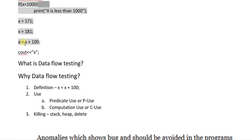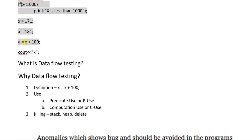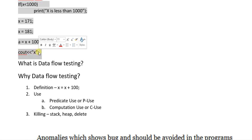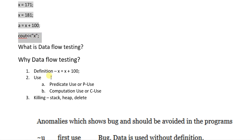When we use the contents of a variable in some computation it is called computation use, or C-use. Like here, we are using the contents of X in the computation X + 100. Similarly, when we print something it is also called C-use.